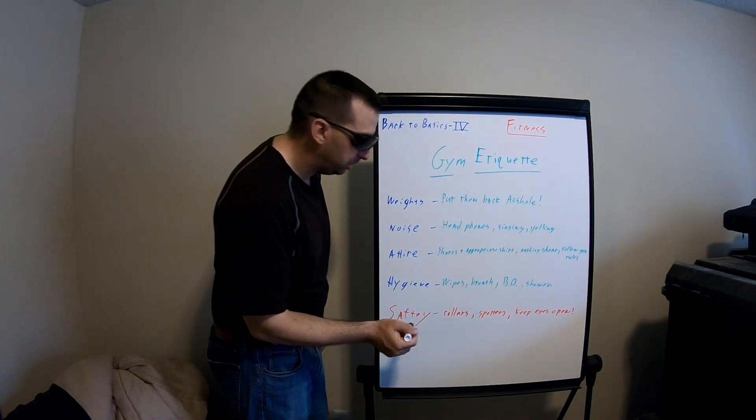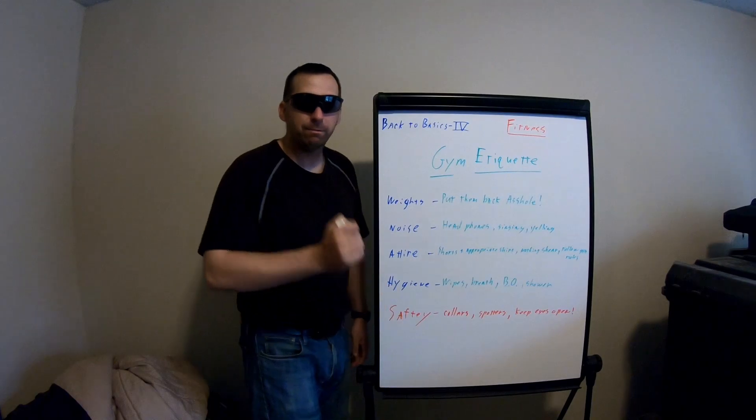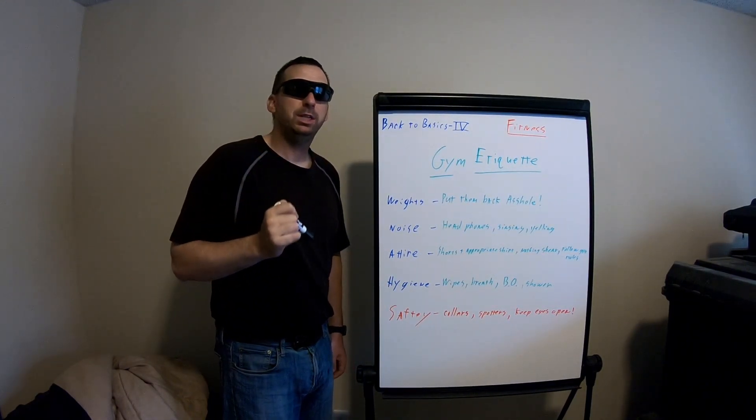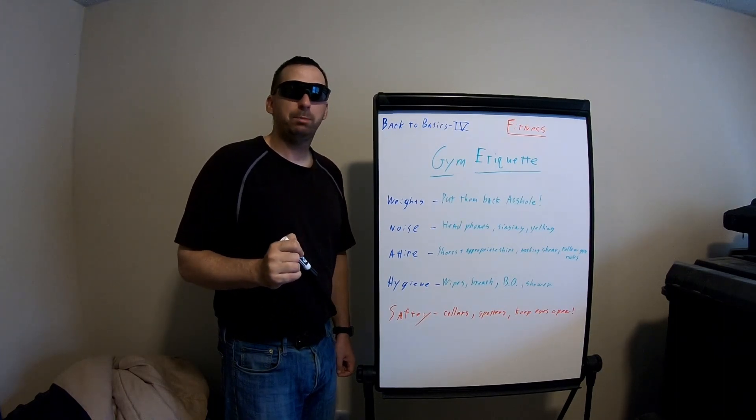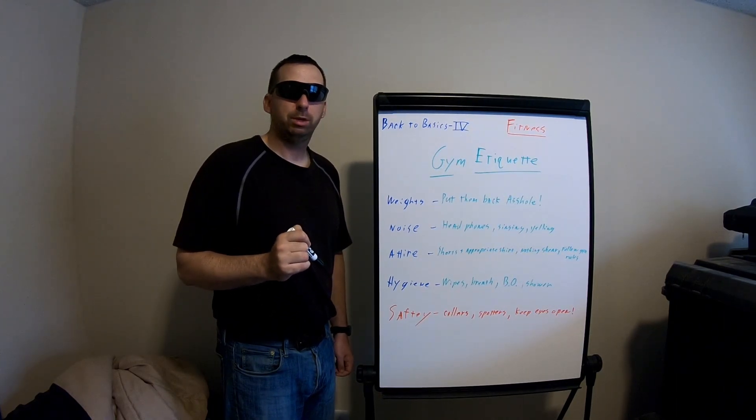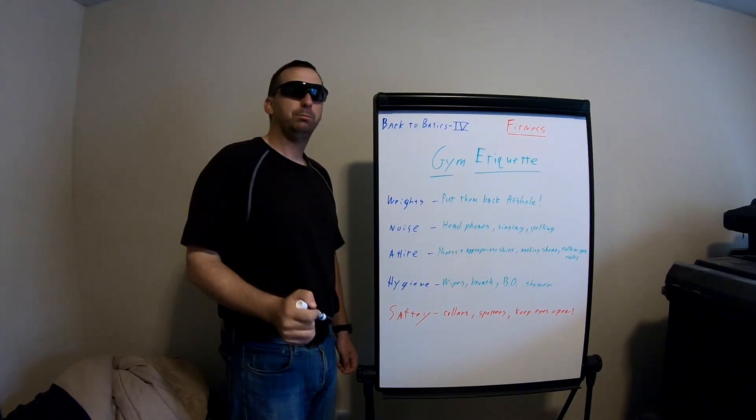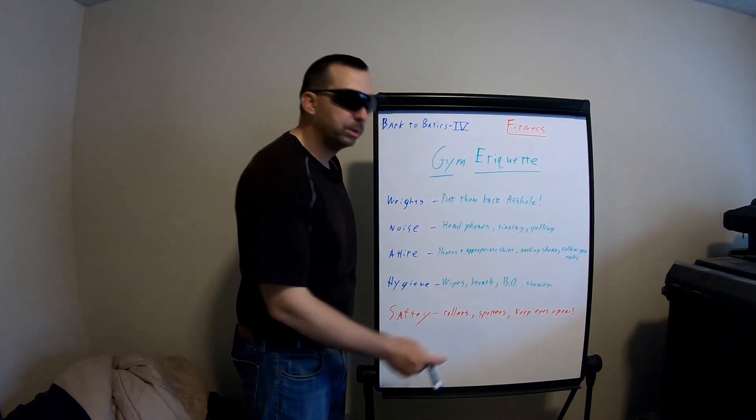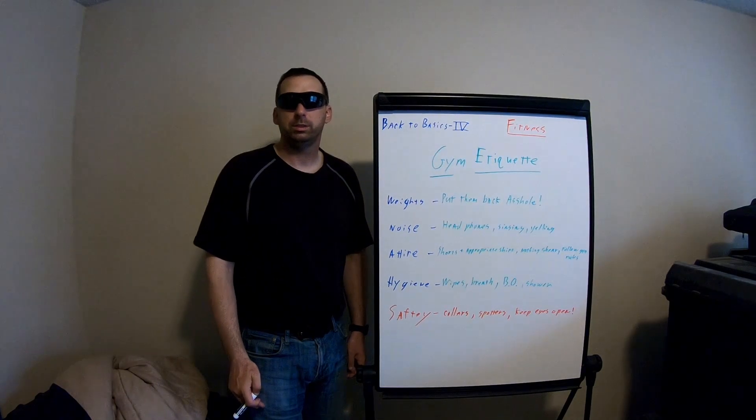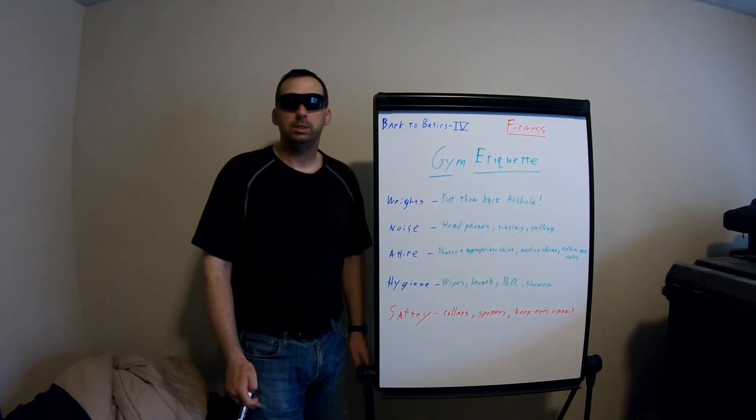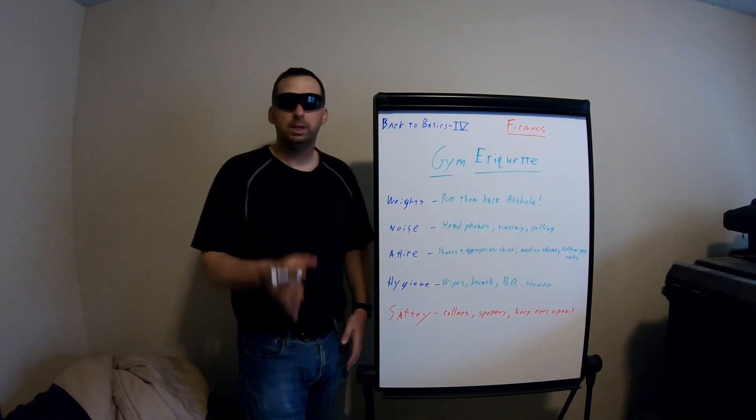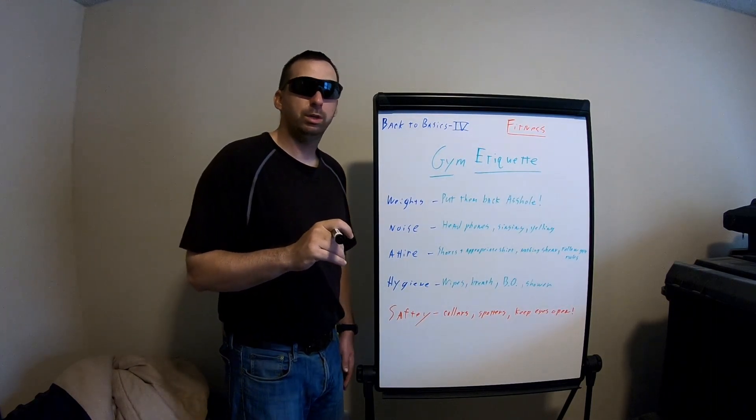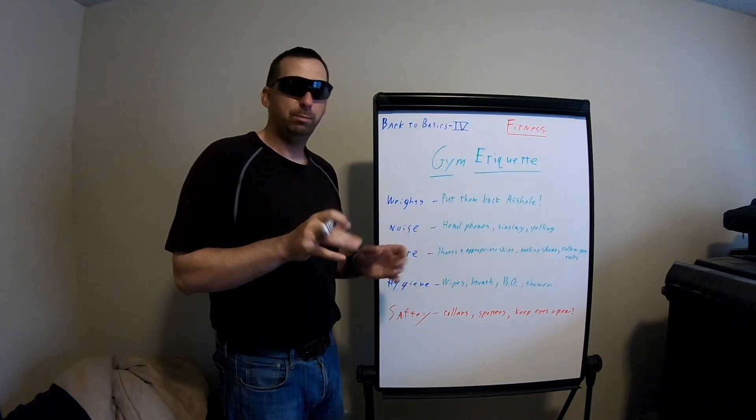Gym etiquette when it comes to safety, this is in red for good reason. I've seen twenty-year-olds mess themselves up permanently because they screwed up. First things first, use the collars on the bars. This is important. If you don't know what the collar is, get the trainers. It has a lot to do with balance.